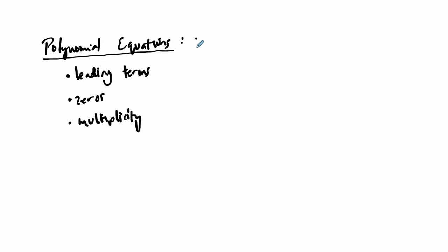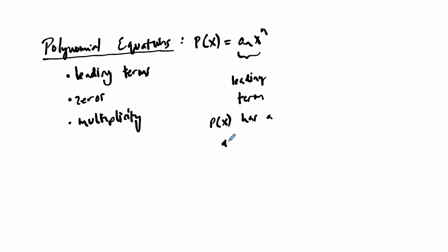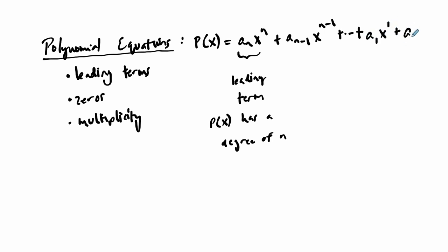In general, a polynomial equation p of x is written where you have a coefficient a-sub-n times x to the n power. This highest term is a non-zero term — a-sub-n is not zero, otherwise this would cancel out. This is the highest power, and we call this whole thing the leading term. It tells you the degree of your polynomial. Whatever that leading exponent is, that's your degree. Then we go along with another coefficient matching the next power of x, and so on, all the way down to some constant times x to the first, plus just a constant. The other coefficients can be zero, but not the leading coefficient.